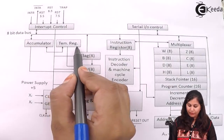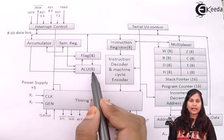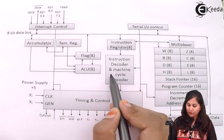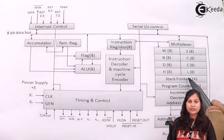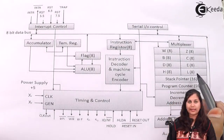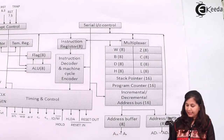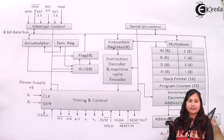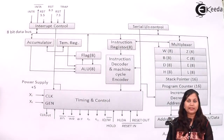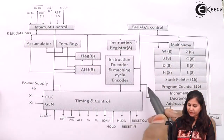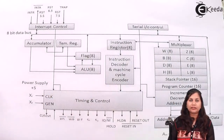The first block is the interrupt control. Then we have the accumulator, temporary register, serial input-output control, instruction register, flag register, ALU (arithmetic and logic unit), instruction decoder and machine cycle encoder, timing and control unit, and a multiplexer. The various registers are W, Z, B, C, D, E, H, L, stack pointer, program counter, incrementer, decrementer, address bus, address buffer, and address-data bus. These arrows show the various signals, and the lines between blocks show the buses providing flow of data between the various blocks.